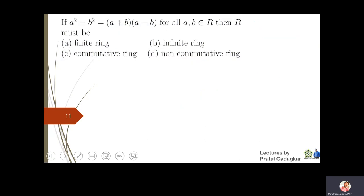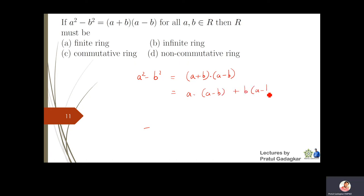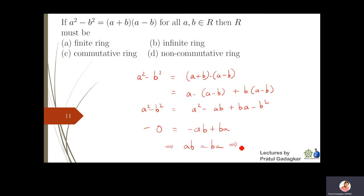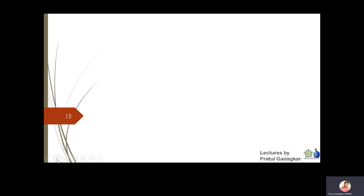The next question: if a²-b² = (a+b)(a-b) for all a, b in a ring, what can we say about the ring? Expanding the right-hand side using distributivity gives a²-ab+ba-b². Setting equal to a²-b² and canceling, we get 0 = -ab+ba, which means ab = ba for all a, b. Therefore the ring R must be a commutative ring.